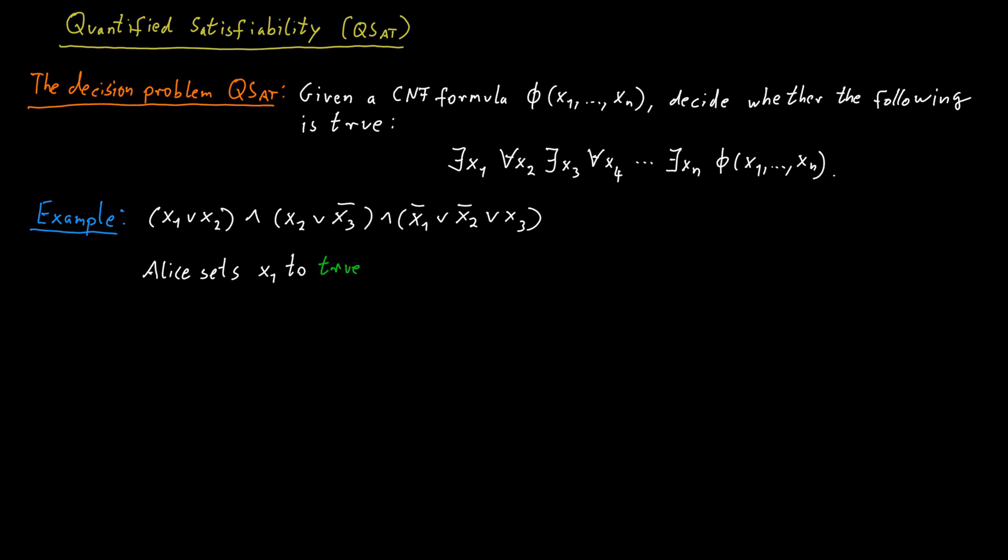This already satisfies the first clause in this Boolean CNF formula. So Alice now only needs to satisfy the remaining two clauses. The second step is that Bob picks a value for x2. He can either set x2 to true or to false.